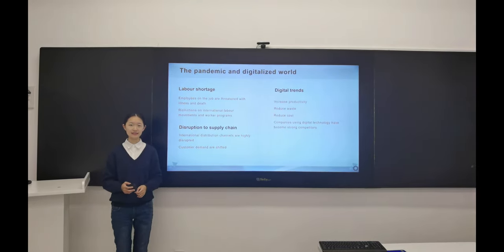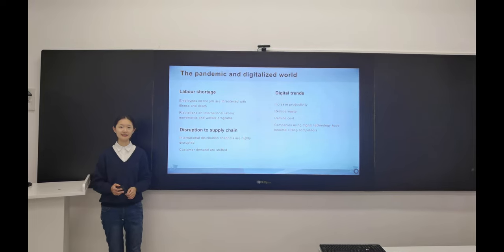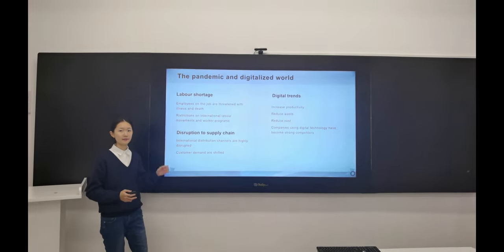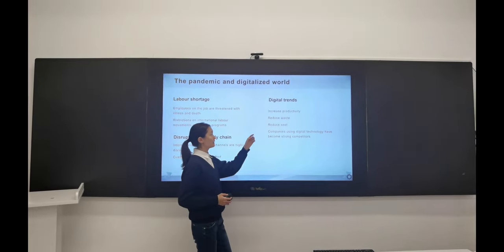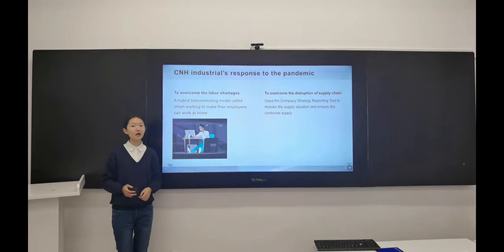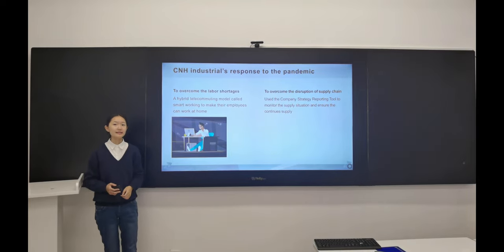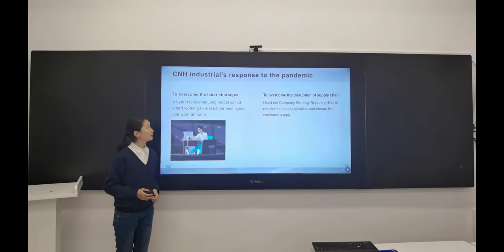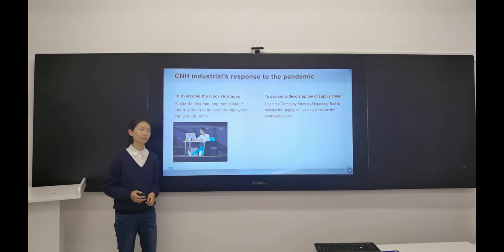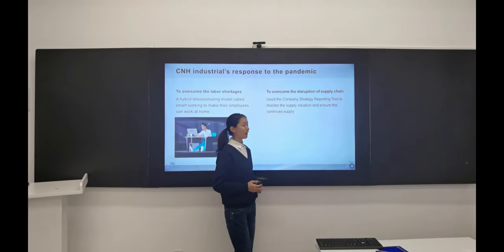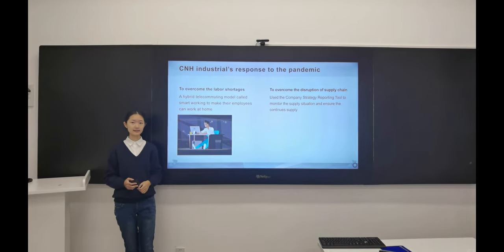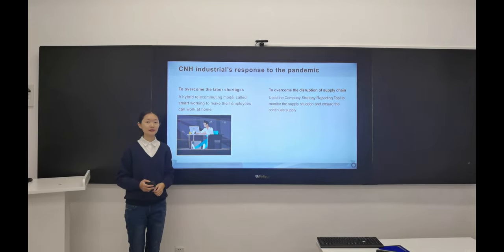Now I will introduce C&H Industry's response to the pandemic and digitalization. The pandemic has caused labor shortages and disruption to the supply chain, while digitalization, as a new trend, also brings great challenges to enterprises. To overcome the labor shortages, C&H Industry came up with a hybrid telecommunity model called smart working to ensure their employees can work at home. For the supply chain, they used the company's strategy reporting tool, which can provide all key information on their existing suppliers to ensure their continuous supply chain.